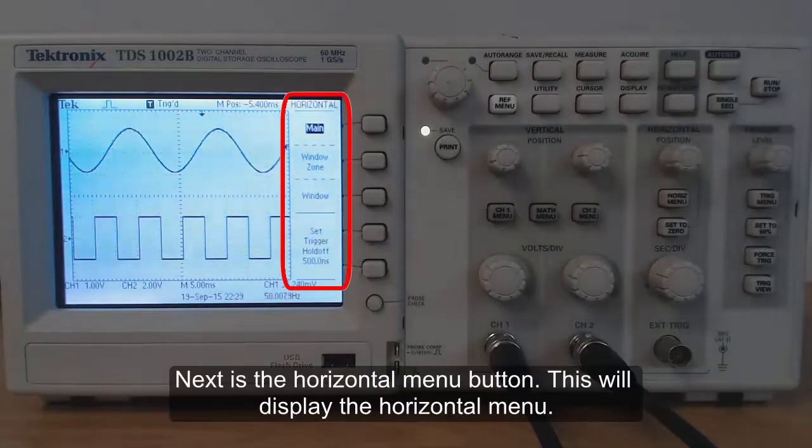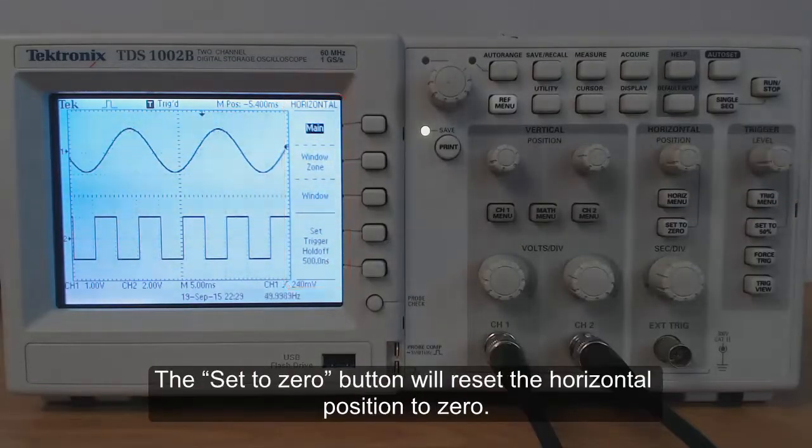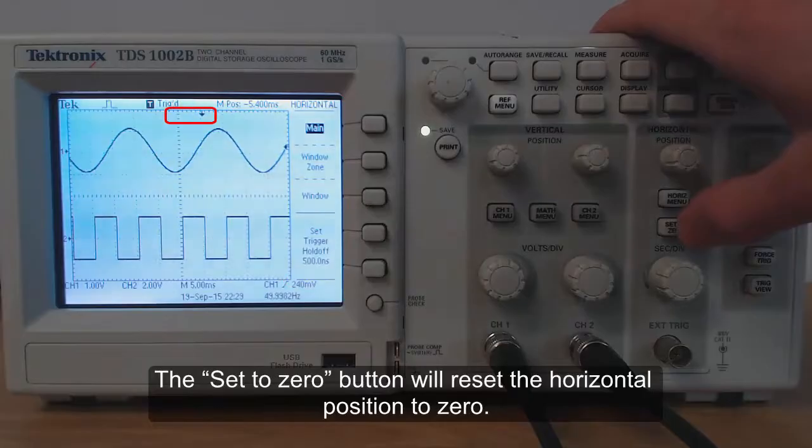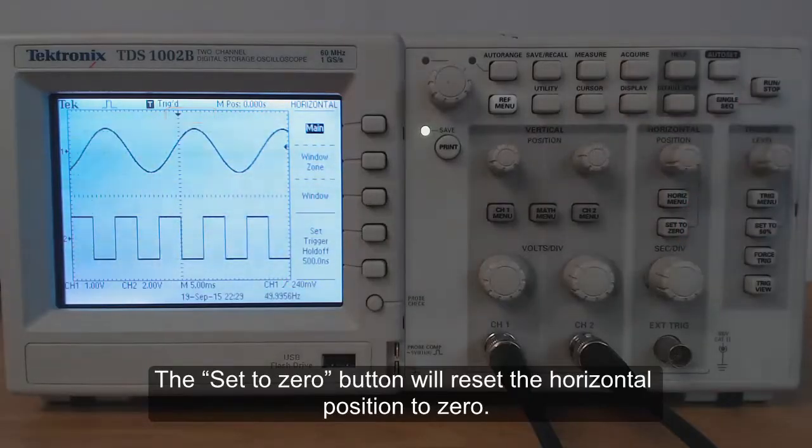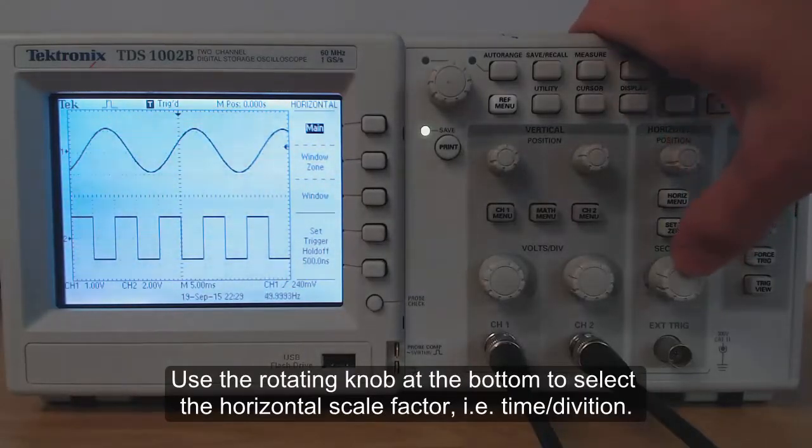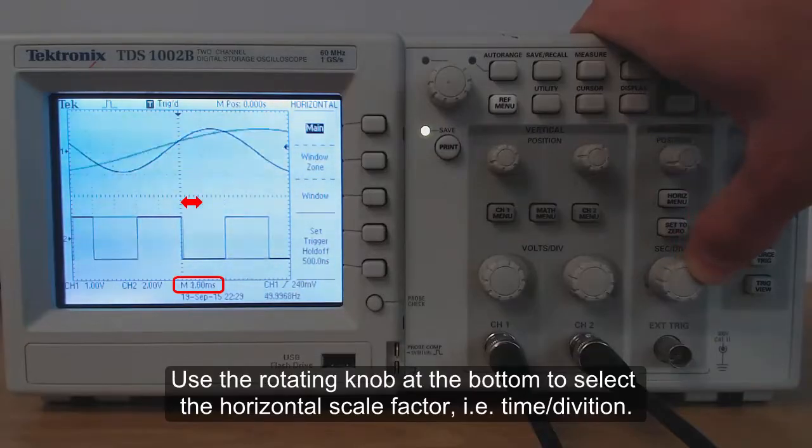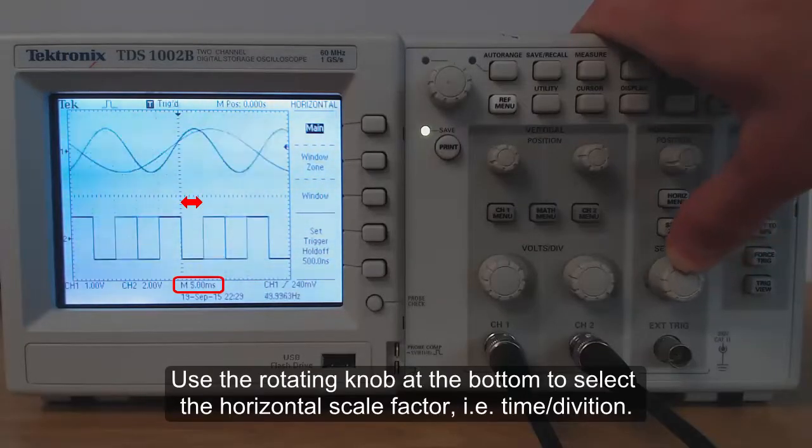This will display the horizontal menu. The set to 0 button will reset the horizontal position to 0. Use the rotating knob at the bottom to select the horizontal scale factor. That is time per division.